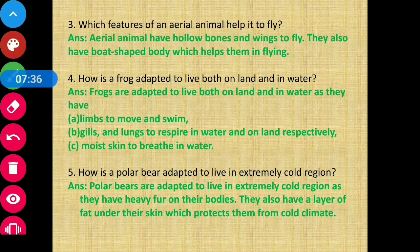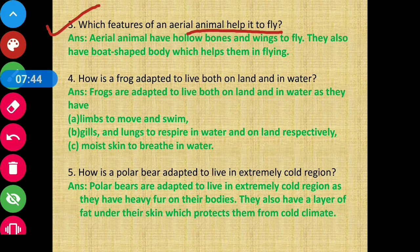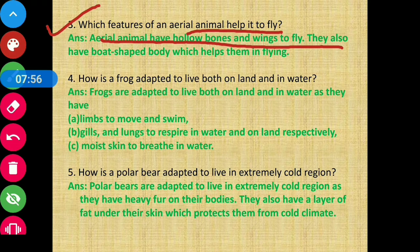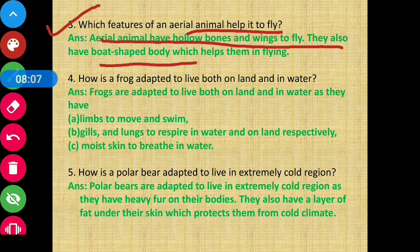Question number 3: which features of an aerial animal help it to fly? Aerial animals have hollow bones and wings to fly. They also have a boat-shaped body which helps them in flying smoothly.